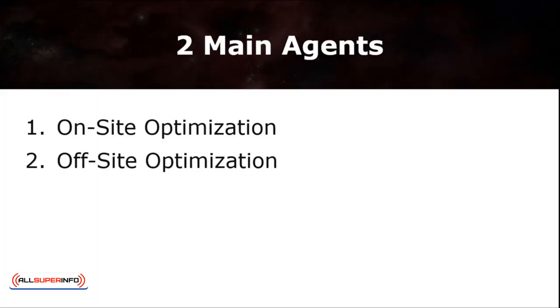There are two main agents that you need to take into account to generate your desired traffic. These agents are: one, the on-site optimization, and two, the off-site optimization.